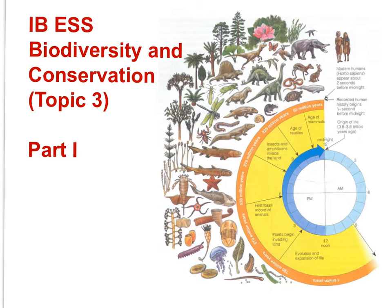IBESS Biodiversity Conservation Topic 3, Part 1 will explain what we mean when we talk about diversity, and this movie will introduce how diversity is measured. There are two significant ideas: one, biodiversity can be identified in a variety of forms, including species diversity, habitat diversity, and genetic diversity. And the second is, the ability to both understand and quantify biodiversity is important to conservation efforts.